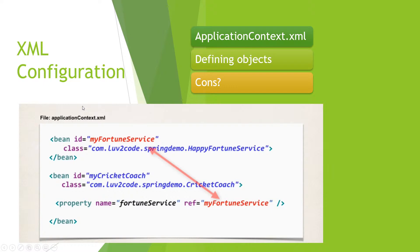XML configuration: we'll have an applicationContext.xml file. Inside this file, we'll be defining all the classes that we need. These classes, or beans as they call them — a spring bean is simply a Java object. When Java objects are created by a spring container, then spring refers to them as spring beans. In summary, whenever you see spring bean, it's just a Java object. You can see they have some references and dependencies — I'll explain that later.